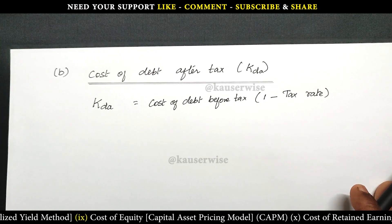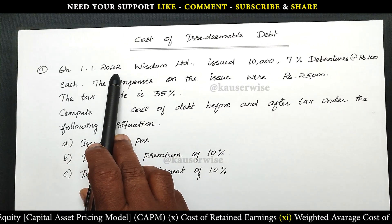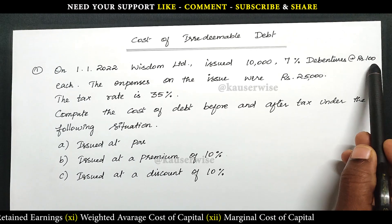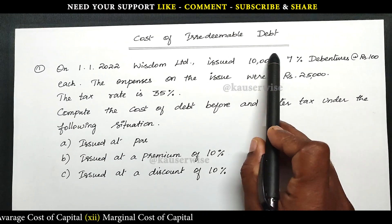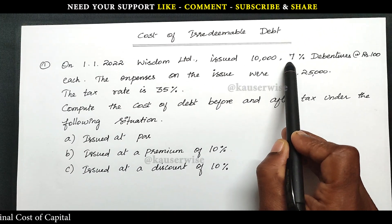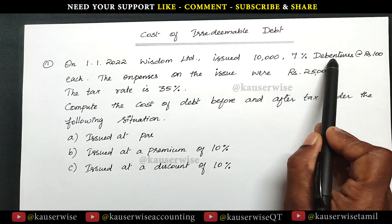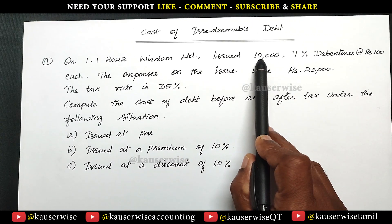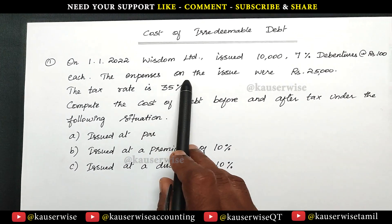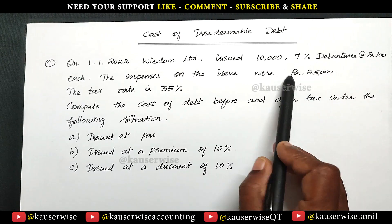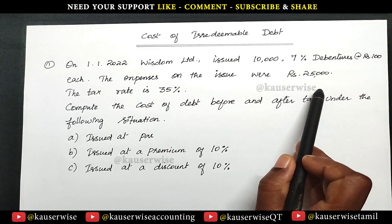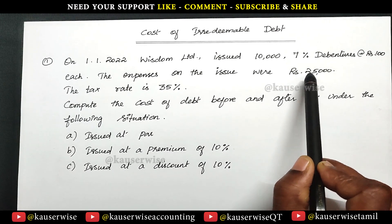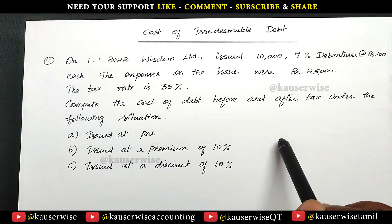Now we are going to see the numerical problem for better understanding. On 1st January 2022, Wisdom Limited issued 10,000 seven percent debentures at rupees 100 each. So 10,000 number of debentures, each costing 100 rupees, giving a total debenture value of 10 lakhs. The expenses on the issue were 25,000 rupees. Sometimes issue expenses are given as a percentage — for example, 2 percent would be calculated on the face value or issue price, whichever is higher.